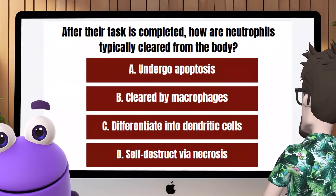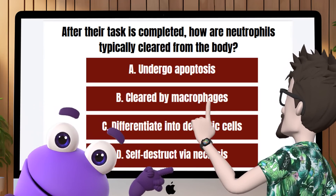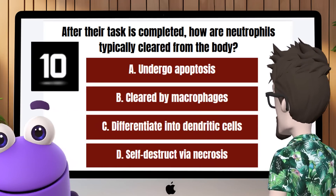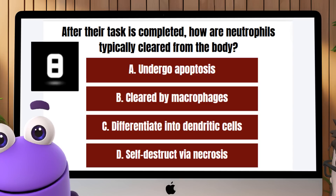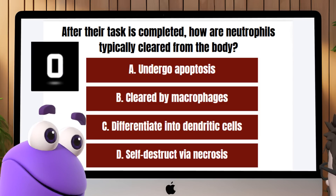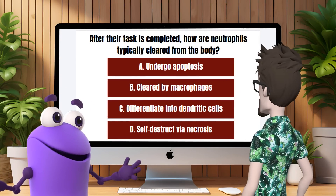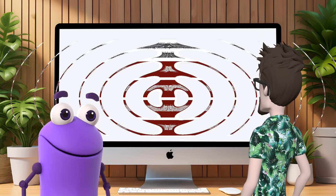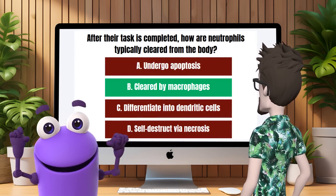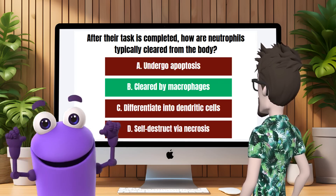Question 4: After their task is completed, how are neutrophils typically cleared from the body? I think it's B — they are cleared by macrophages. Absolutely right. After their mission, neutrophils are phagocytosed and cleared away by macrophages to maintain balance.